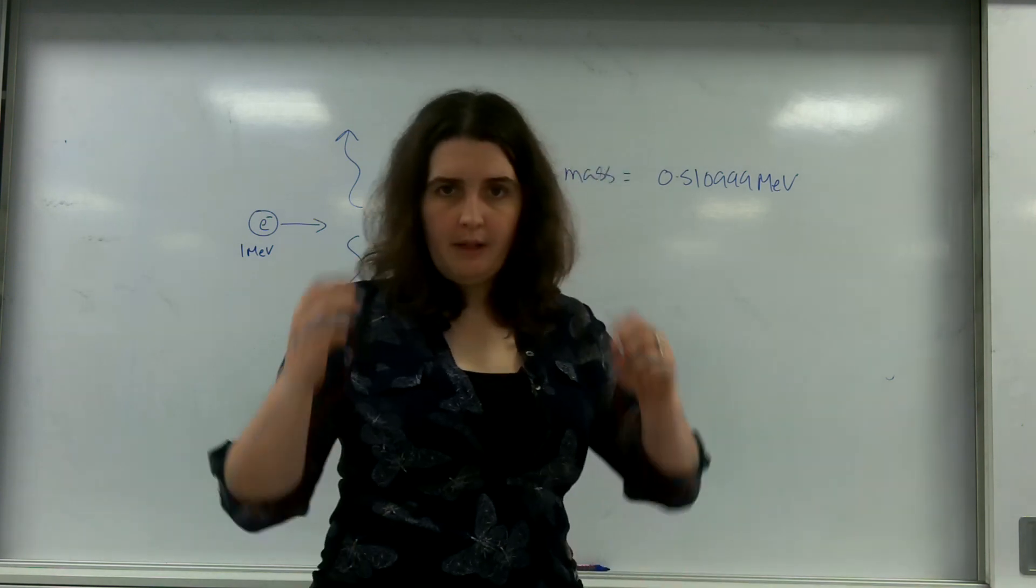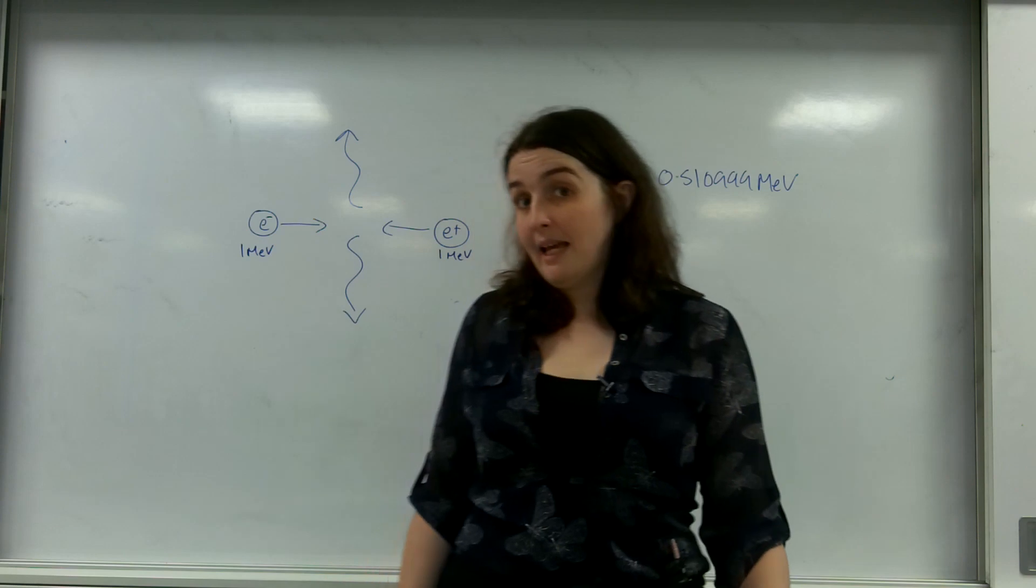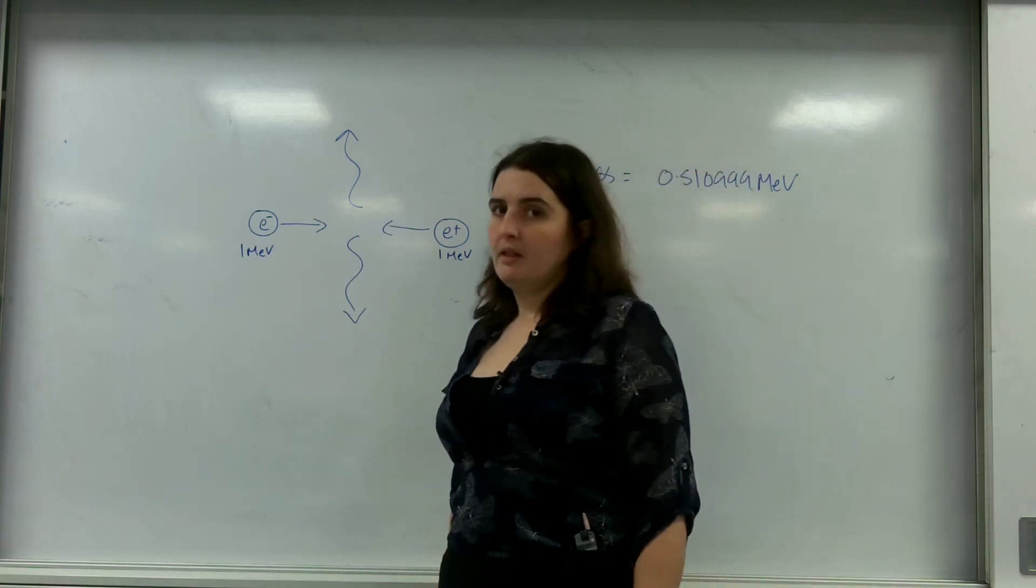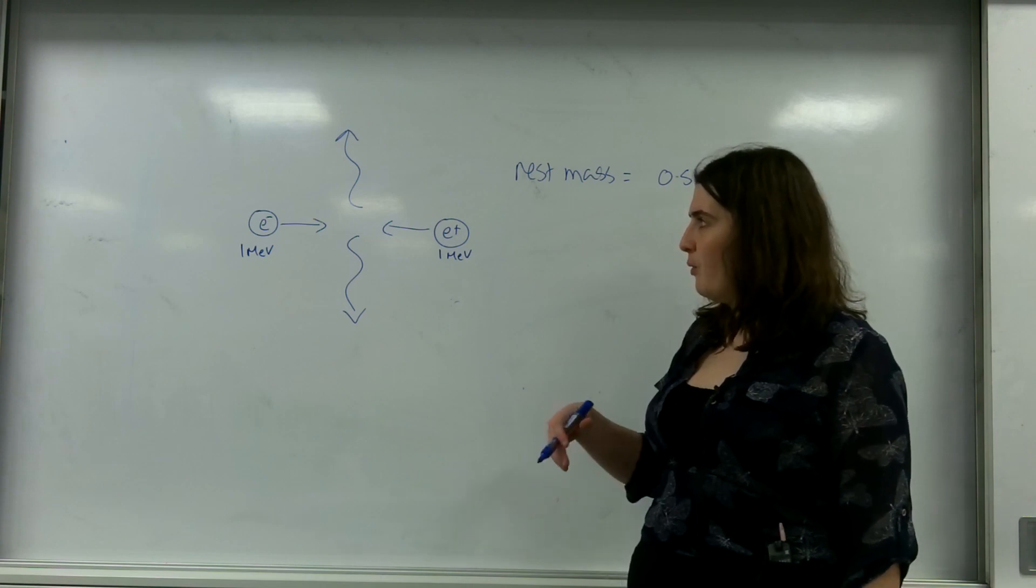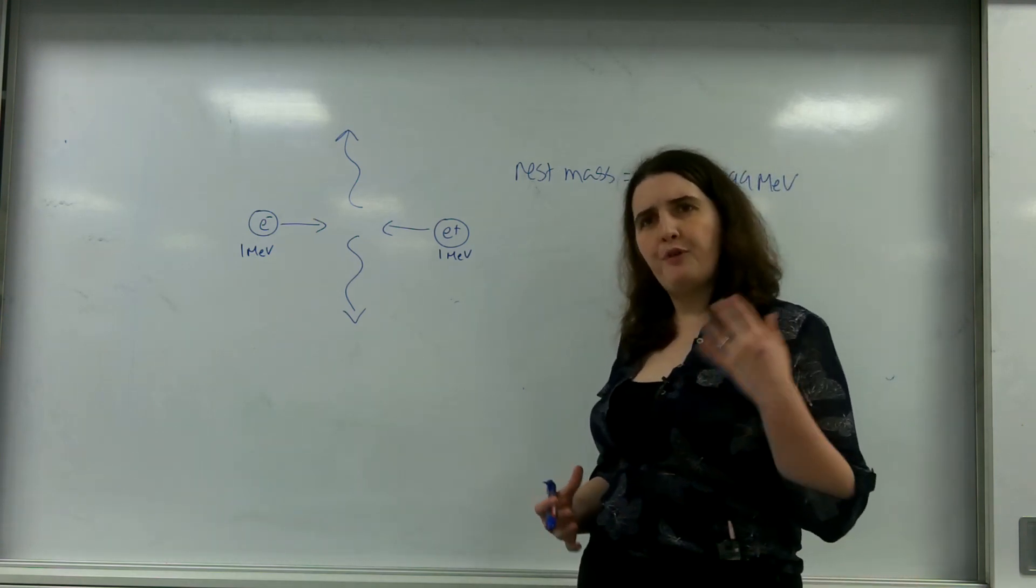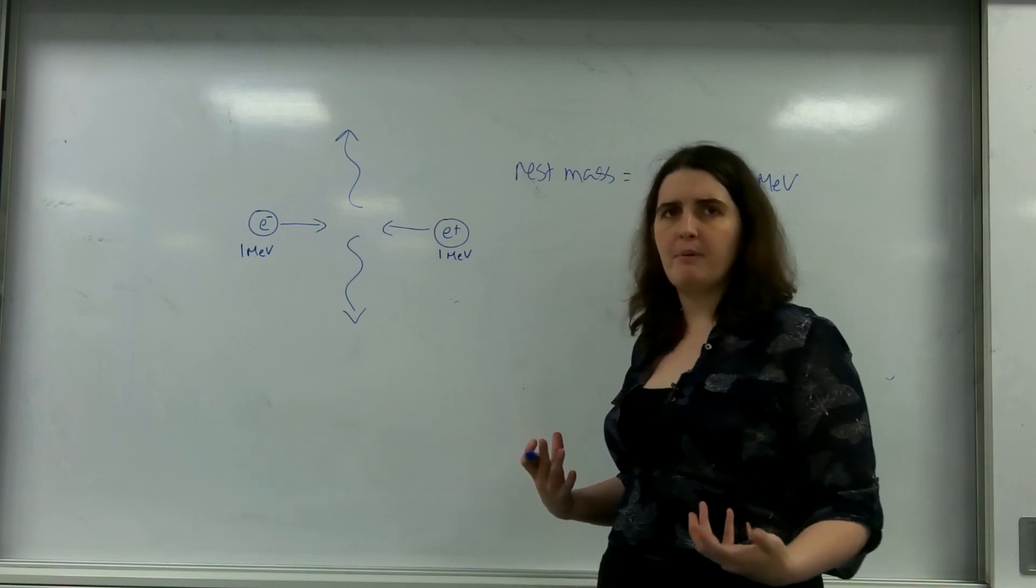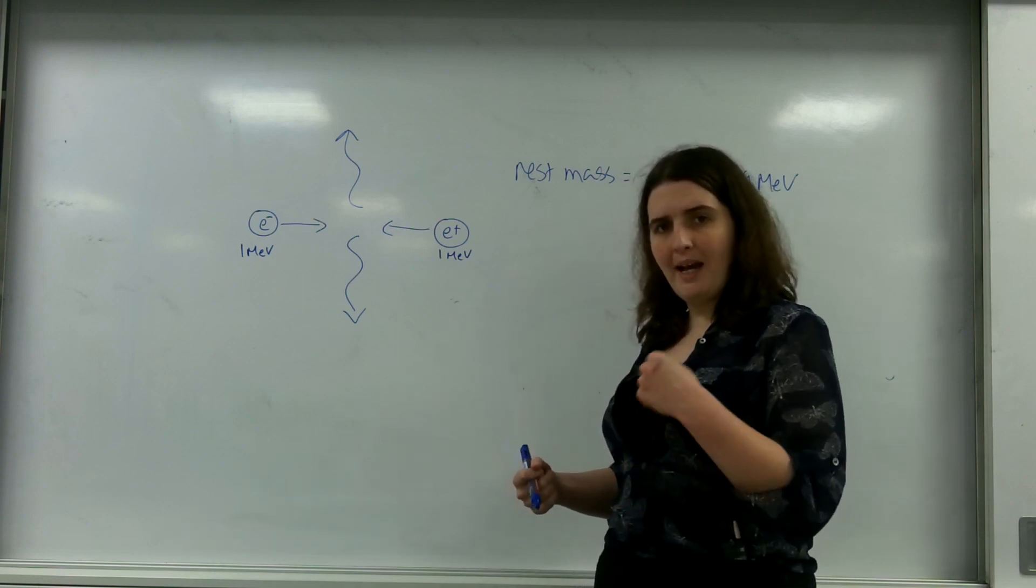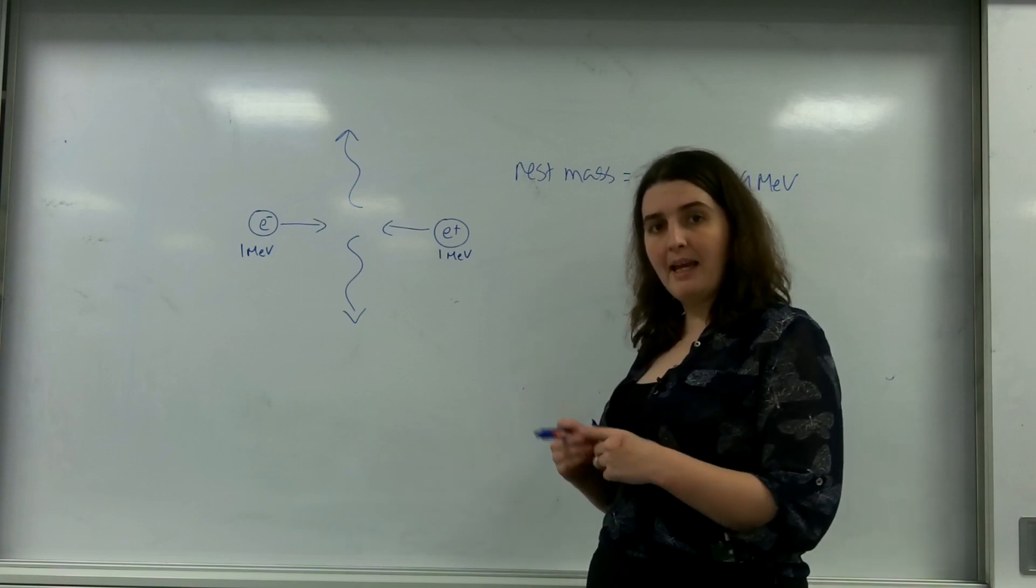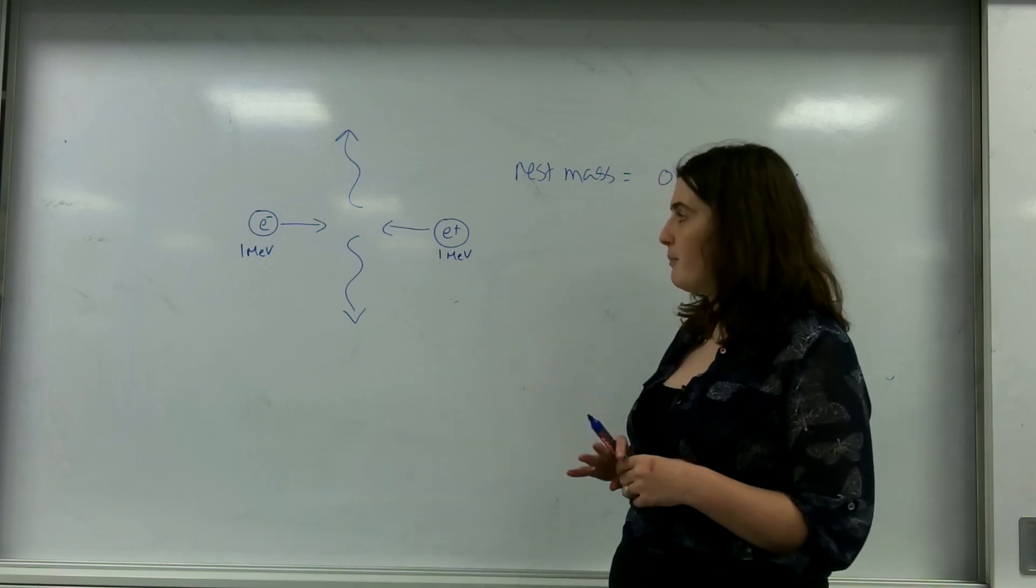So when a particle and an antiparticle meet, they annihilate each other. Now it's important to notice what will happen after this. Pair production is when a photon makes a particle and an antiparticle, annihilation is when a particle and an antiparticle annihilate each other and make two photons, as this diagram describes here.